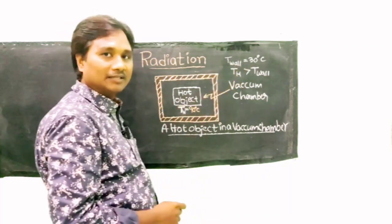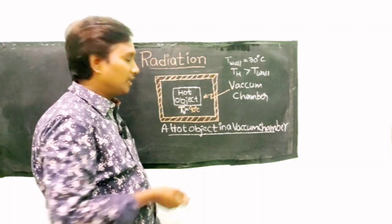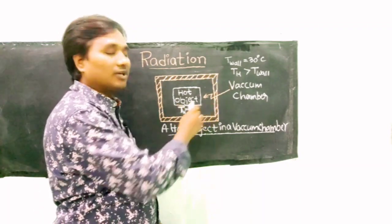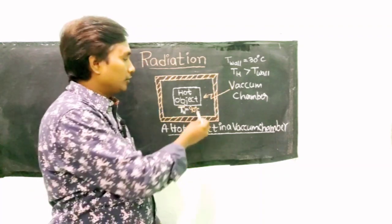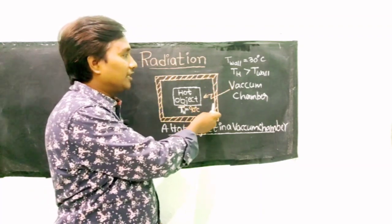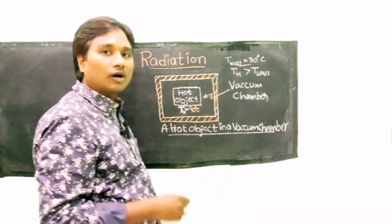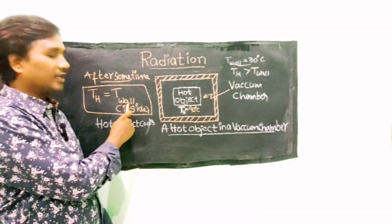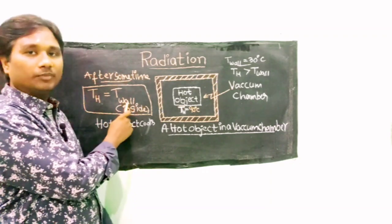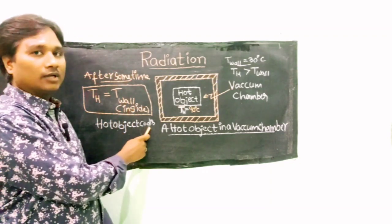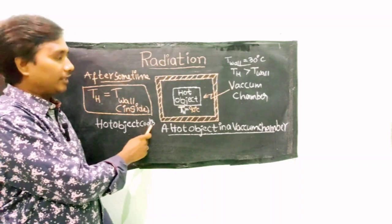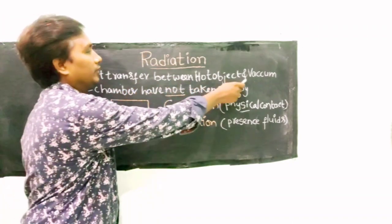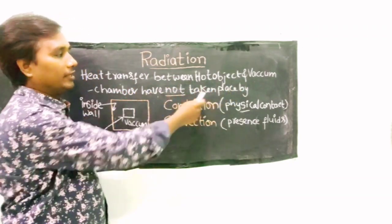The inside wall temperature is 30 degrees Celsius. After some time, this hot object discharges its heat to the inside walls of the vacuum chamber. The hot object reaches equilibrium with the temperature of the wall — the temperature of the hot object becomes equal to the temperature of the wall. The hot object cools and loses its heat to the inside wall.